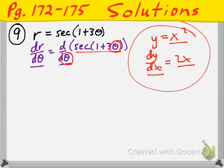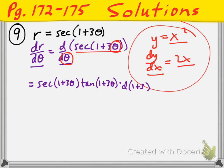The derivative of the secant — we know that to be: secant equals the secant of whatever (which is 1 plus 3θ), multiplied by the tangent of the whatever (which is again 1 plus 3θ), and then we multiply that by the derivative of the whatever. The derivative of 1 plus 3θ with respect to θ is just 3.